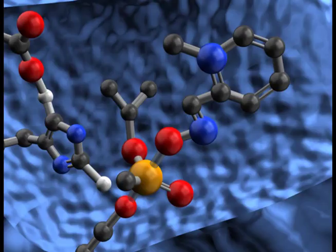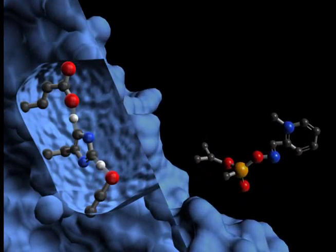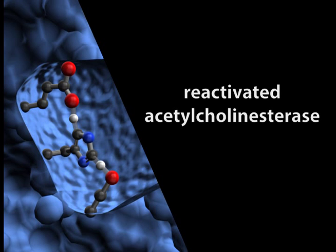The bond between sarin and serine fully breaks, and the resulting phosphonylated 2-PAM molecule diffuses away, returning the serine to its starting state, and thus reactivating the enzyme.